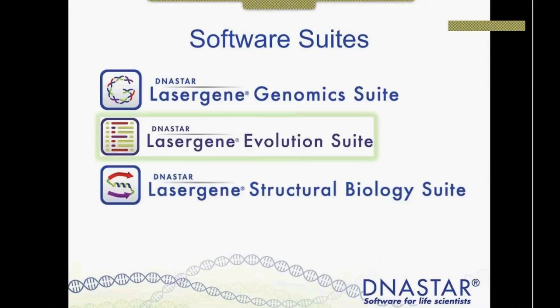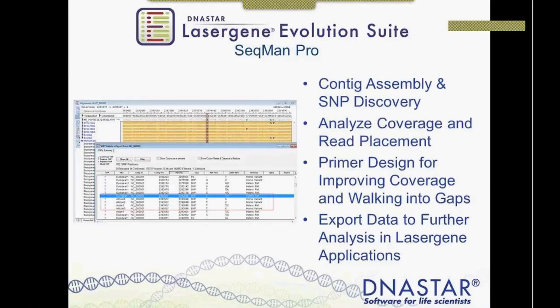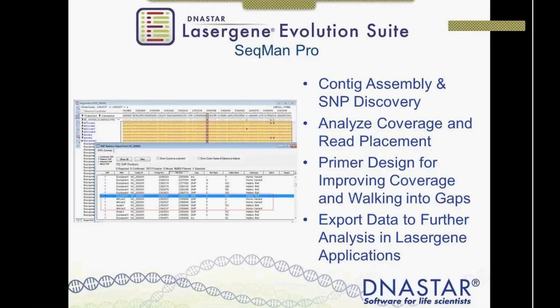We offer several software suites as part of the Lasergene package. Our most popular suites are the Lasergene Genomic Suite for next-generation sequence assembly and analysis. Then we have the Lasergene Evolution Suite for Sanger data assembly, analysis, and phylogenetic analysis. And then we have the Lasergene Structural Biology Suite for protein sequence and structure analysis. The Lasergene Evolution Suite is what contains SeqMan Pro, and the Sanger data analysis and assembly I'll be covering today will be, for the most part, in SeqMan Pro.